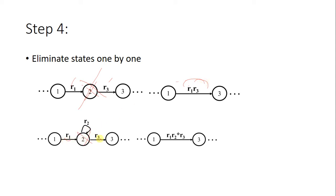For an edge which is a loop — an optional loop — you represent it with Kleene star. So you can have zero to many occurrences of R2. As we know in theory of automata, Kleene star means zero to many. This was Step 4.